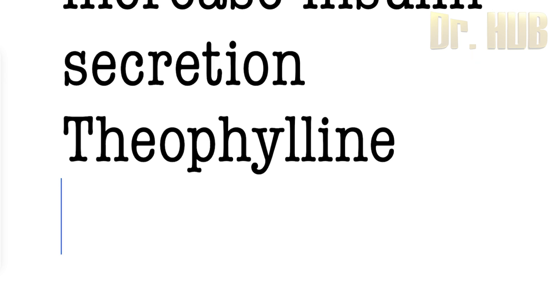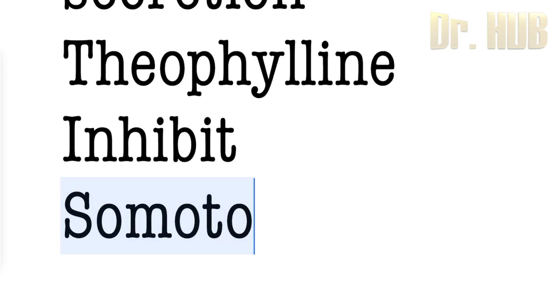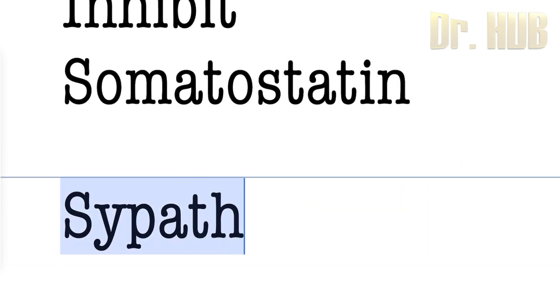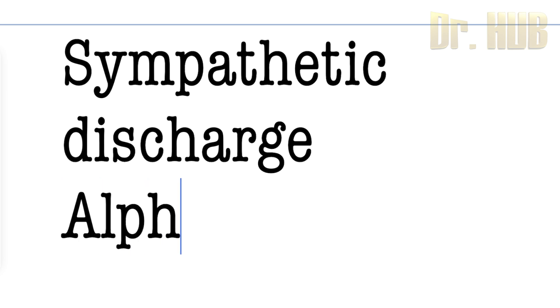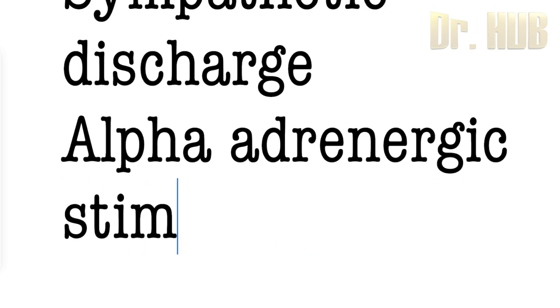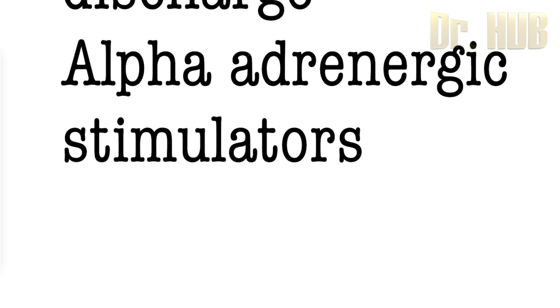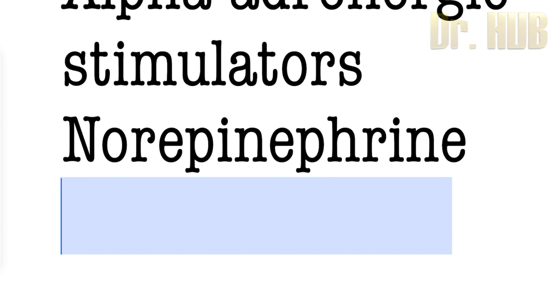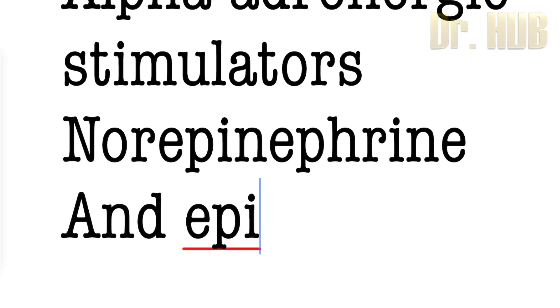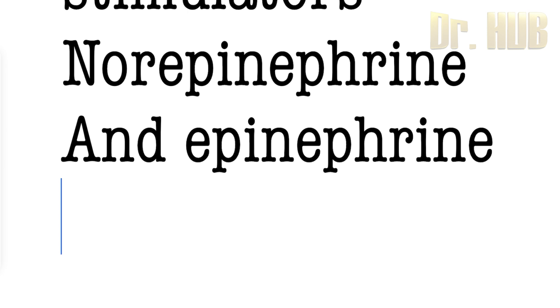There is also theophylline. Now let us look at the factors that inhibit the insulin secretion. Inhibition is by somatostatin and sympathetic discharge — specifically alpha-adrenergic stimulators like norepinephrine and epinephrine, which inhibit insulin secretion.